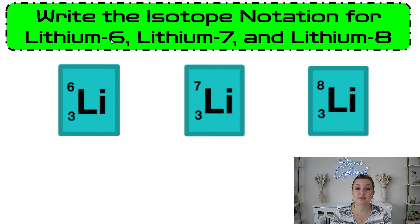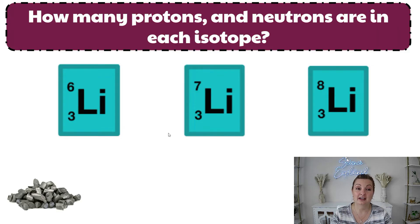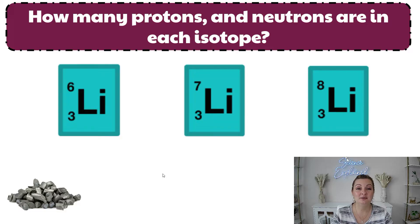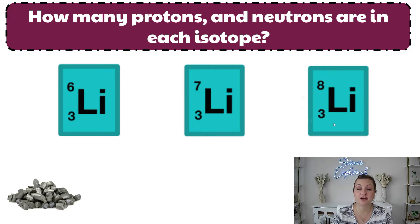Now the top number is what's going to change, and that is going to be based off of the mass. It told us the mass right here — this 6, 7, and 8 is referring to the atomic mass of that particular isotope. So we can go ahead and write the 6, the 7, and the 8. Now, how many protons and neutrons does each isotope have? Well, we already said they had three protons. But what about neutrons? We get that answer by taking the atomic mass and subtracting the atomic number, or number of protons. So if we do 6 minus 3, we get 3 neutrons for this isotope; 7 minus 3 gives 4 neutrons; and 8 minus 3 gives 5 neutrons. And that's what lithium looks like, just in case you guys are wondering.